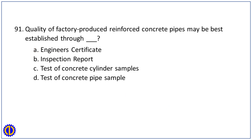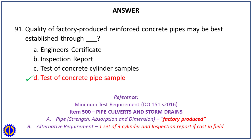Question 91. Quality of factory-produced reinforced concrete pipes may be best established through: A. Engineer Certificate. B. Inspection Report. C. Test of Concrete Cylinder Samples. D. Test of Concrete Pipe Sample. Answer: D. Test of Concrete Pipe Sample. Reference: Minimum Test Requirement D-O-151S-2016, Item 500, Pipe Culverts and Storm Drains — A. Pipe: Strength, Absorption and Dimension (Factory Produced). B. Alternative: One set of three cylinders and Inspection Report if cast in field.